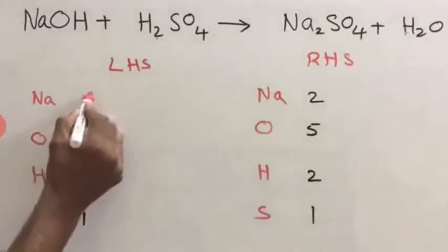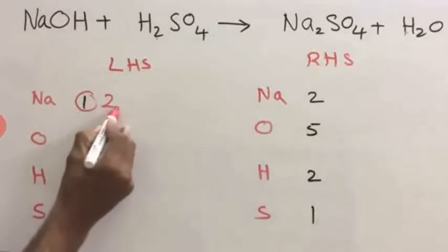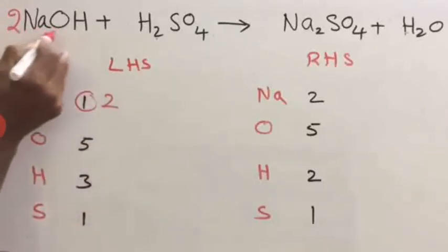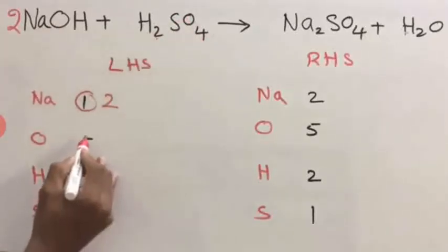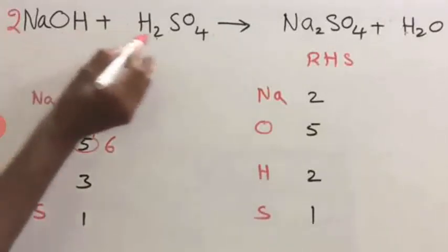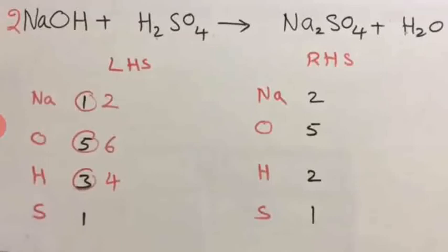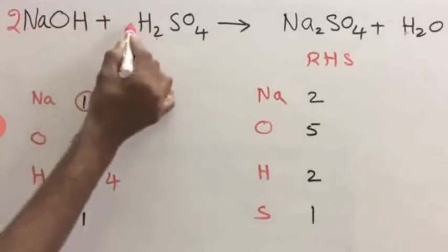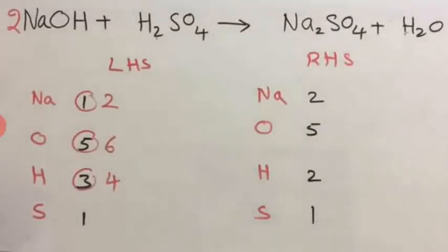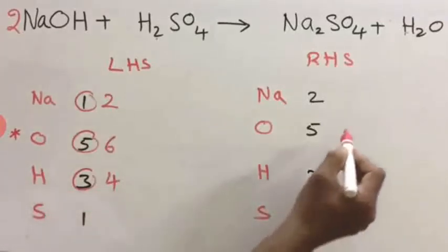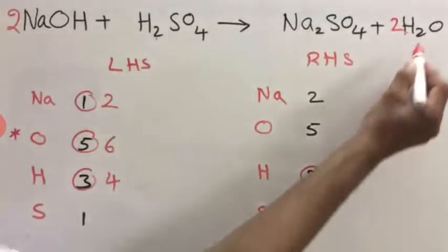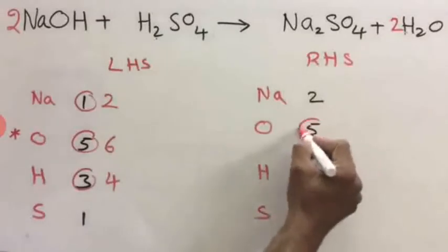Now let us balance. On LHS you have 1 sodium, on RHS 2. So we have to multiply with 2 so that they balance — writing 2 here, so 2 Na. But the number of oxygen changed: now 2 oxygen and 4 here, total 6. And hydrogen: 2 and 2, that is 4. Now check oxygen: here 6, here 5. If you work for oxygen it will look very complicated, so we will check it at the end. Check hydrogen: here 4 on LHS, here 2 on RHS. Write 2 here, then hydrogen becomes 4. But oxygen also changes: 2 here and 4 here, that means 6 oxygen.